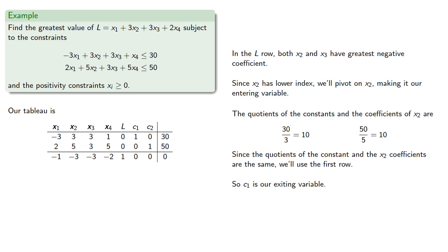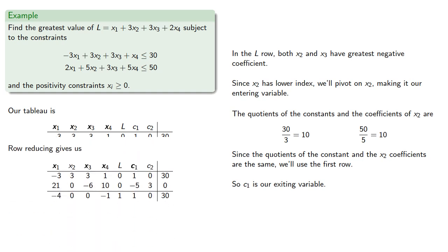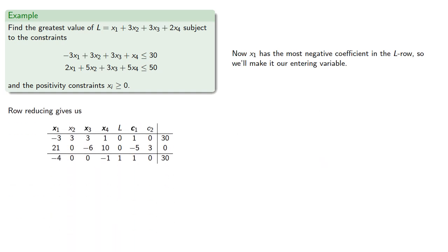So row reducing gives us... Now x1 has the most negative coefficient in the L row, so we'll make it our entering variable. The quotients of the constant and the x1 coefficients are... So the least entry is... Well, is a negative number less than zero?